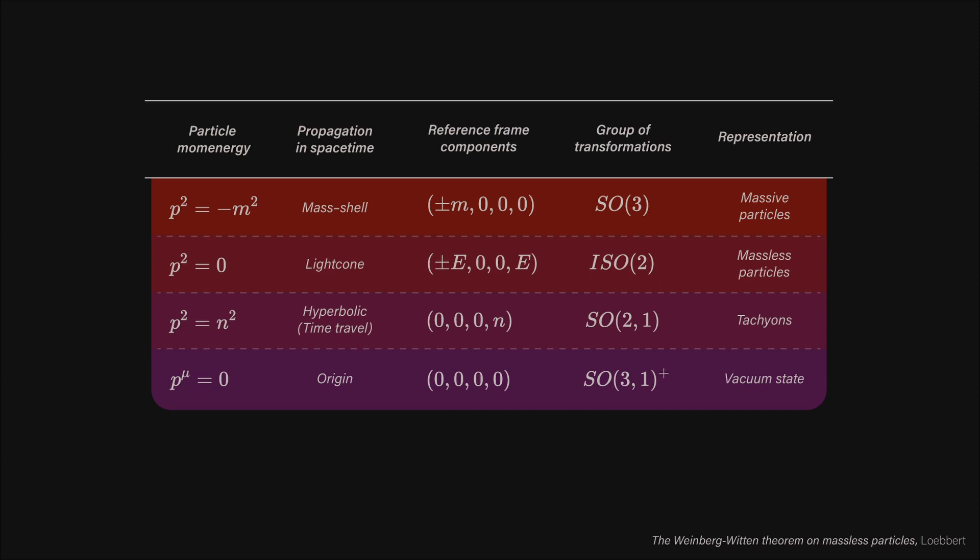The third and fourth cases are not very interesting. The third case is for hypothetical tachyonic particles that run outside the light cone, so faster than light, and the fourth is just the quantum mechanical vacuum state.